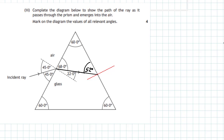Now we're in a position to find the angle between the normal and the surface. Between the edge of the prism and the normal is 90 degrees, so these two angles must add up to 90 degrees. Therefore that angle must be 90 minus 52, which gives an angle of 38 degrees. We've now got that angle inside the prism, and all we need to do is find the emergent angle. But first, remember the critical angle for this glass block was 32 degrees.